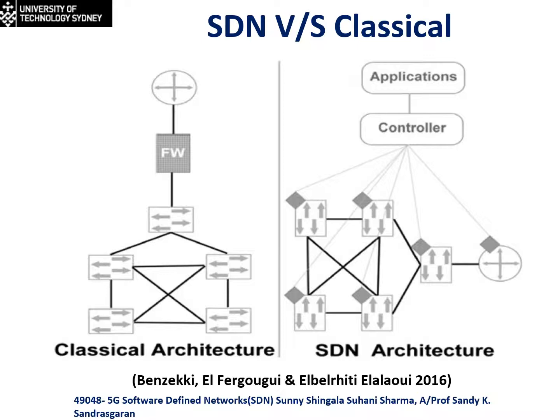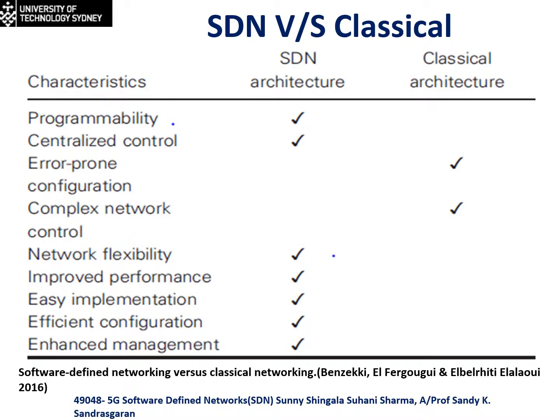This slide shows a comparison of classical architecture and SDN architecture. In classical architecture, implementation and configuration of the network is complex, resulting in large operational costs. In SDN architecture, since SDN separates routing and forwarding decisions from the data plane, network administration and management becomes simple.